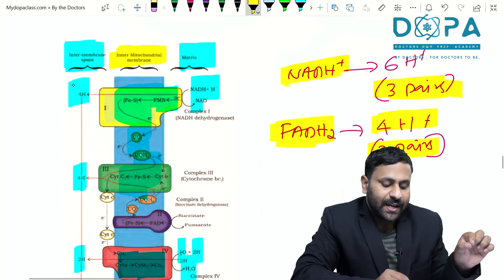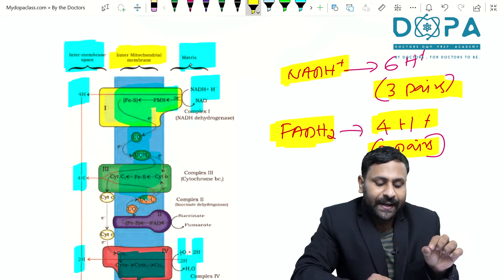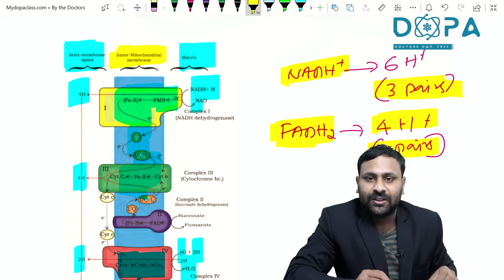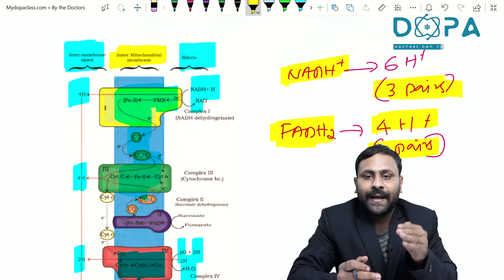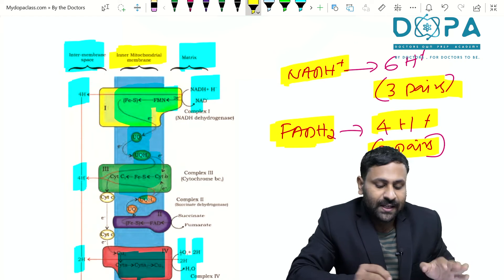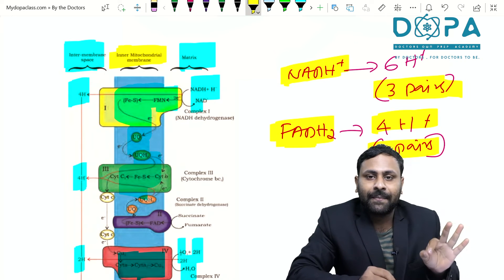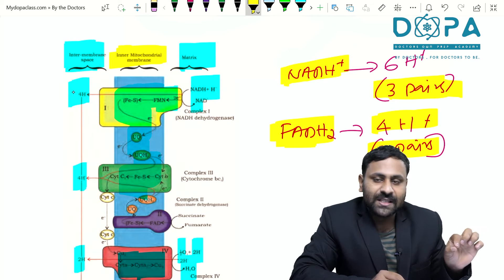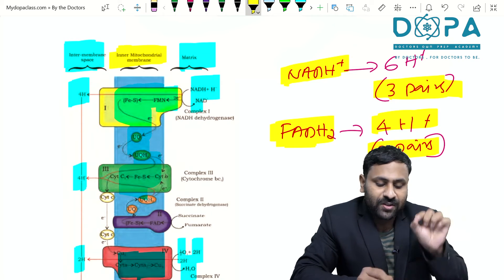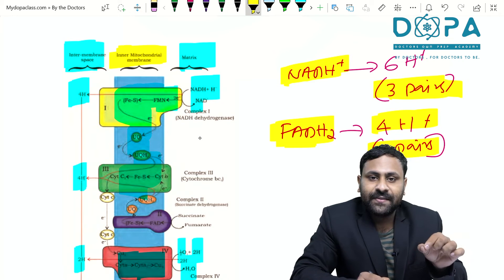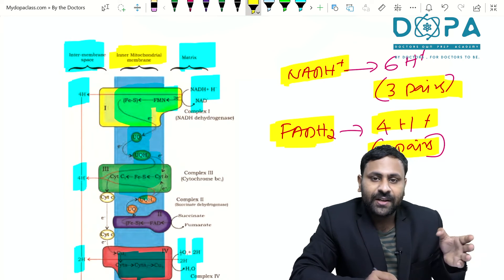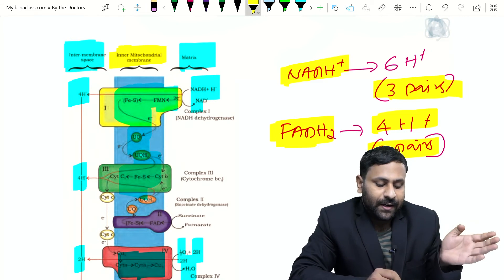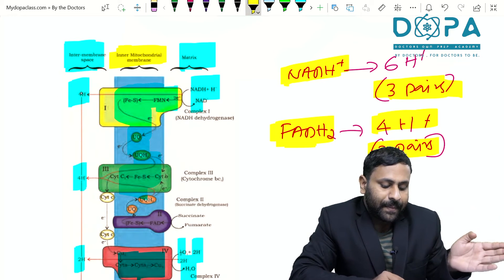This creates a proton gradient — the number of protons increases within the inter membrane space and decreases within the matrix. We already discussed the chemiosmotic hypothesis in the photosynthesis chapter. This gradient is broken down when protons move back from the inter membrane space to the matrix.